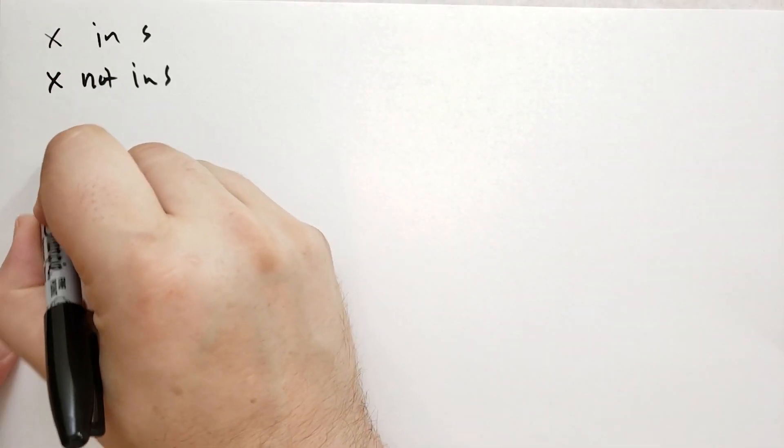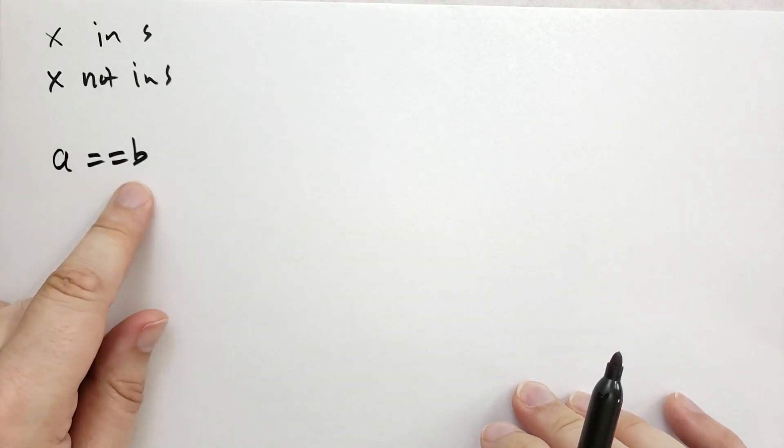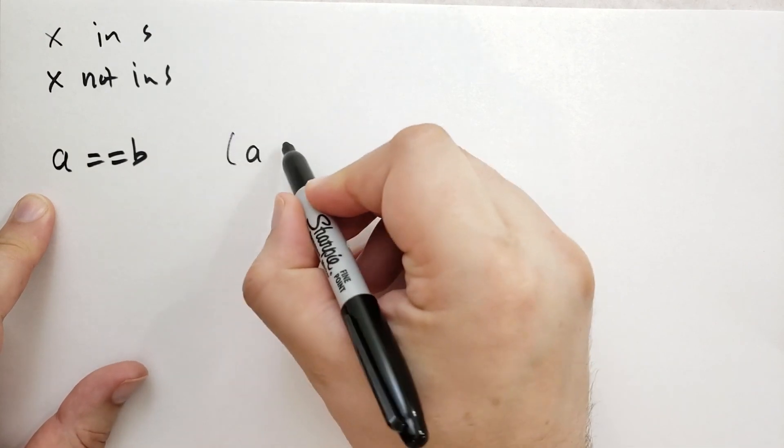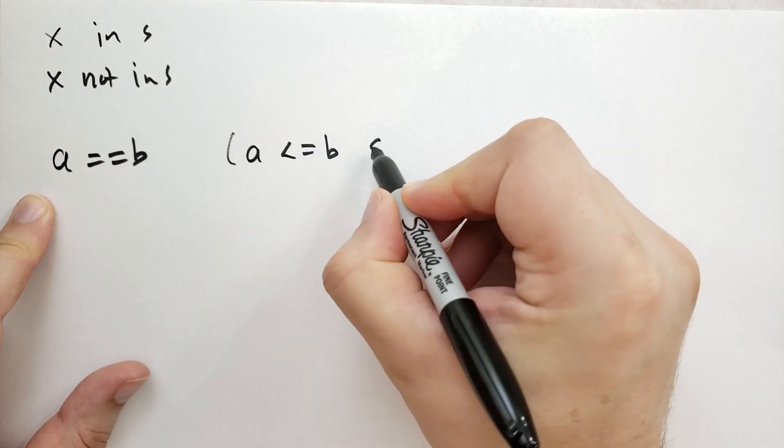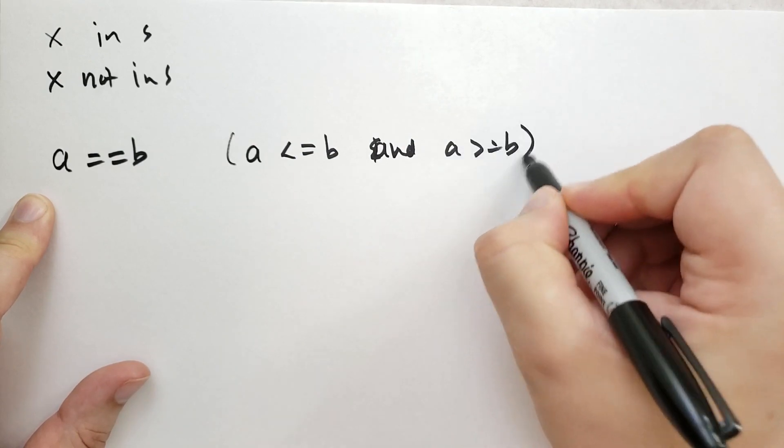We also have a is equal to b, which is true if all the elements in a are found in b and all the elements of b are found in a. So this is the same as a is less than or equal to b and a is greater than or equal to b.